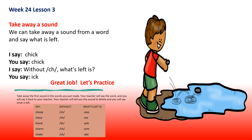Now we can take away a sound. We can take away a sound from a word and say what is left. Say chick. Without the ch, what is left? Ick. Very good. Let's practice. Say sheep. Without the sh, what is left? Eep. Say chew. Without the ch, what is left? Oo. Say charm. Without the ch, what is left? Arm. Nice job.